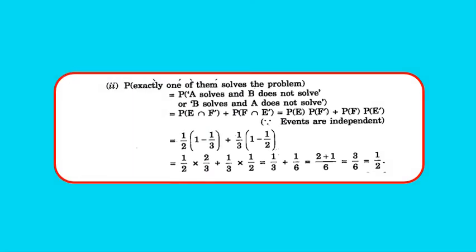Second part: probability exactly one of them solves the problem. P = P(E∩F') + P(F∩E') = P(E)×P(F') + P(F)×P(E') = 1/2 × (1 - 1/3) + 1/3 × (1 - 1/2) = 1/2 × 2/3 + 1/3 × 1/2 = 1/3 + 1/6 = 1/2. Please pause and note down the solution.